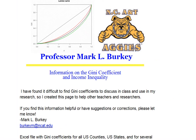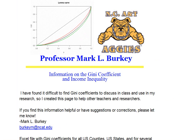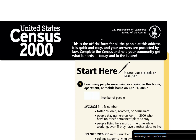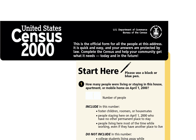I want you to understand why there will not be any Gini coefficients coming from the Census 2010. Let's go back to the Census 2000 — and also in 1990, and I believe in earlier censuses. One out of every six households, somewhere between 10, 15, or 20 percent depending on the county, got what is called the census long form.